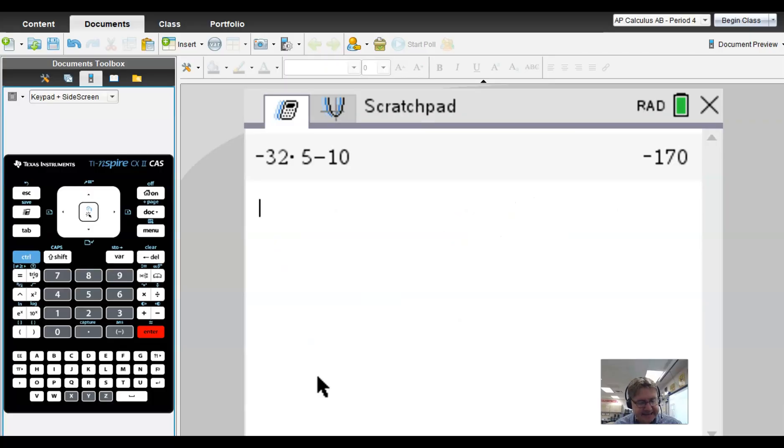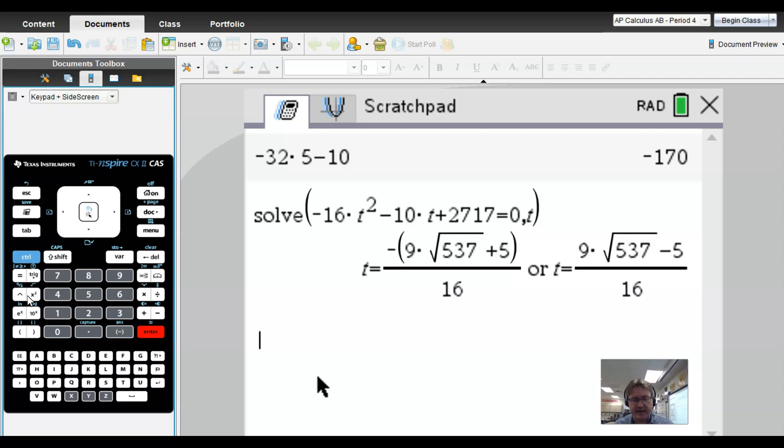Here we are with our TI-Inspire. Depending on your calculator, there's a variety of ways to do this. You might have to graph your equation and find where that graph hits the x-axis. But if you have CAS capability, you could use an algebra solve algorithm. We'll type in this expression: -16t² - 10t + 2717 = 0. We have to tell the TI-Inspire that we want to solve for t.